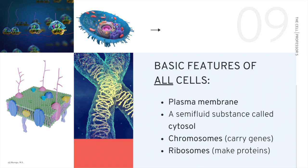While eukaryotic and prokaryotic cells differ in a big way, there are basic features that all cells have in common. All cells are surrounded by a plasma membrane, all cells have a semi-fluid substance called cytosol, all cells have DNA in the form of chromosomes which carry genes, and all cells have ribosomes, which are what make our proteins.